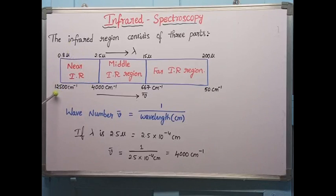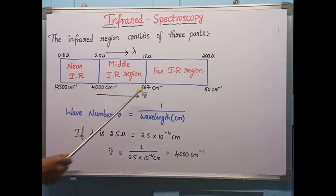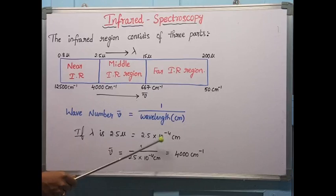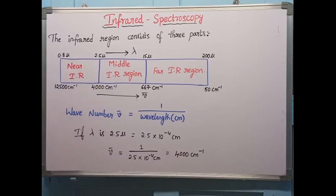Converting these regions into wave number units: the near infrared region is 12,500 to 4,000 cm⁻¹, the middle infrared region is 4,000 to 667 cm⁻¹, and the far infrared region is 667 to 50 cm⁻¹. The wave number formula is: wave number equals 1 divided by wavelength in centimeters. For example, 2.5 microns equals 2.5 × 10⁻⁴ cm, which gives 4,000 cm⁻¹.